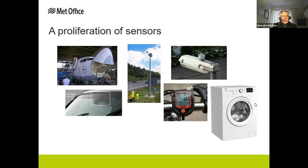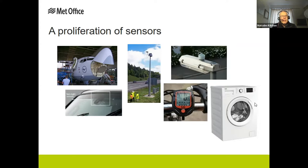There is a real proliferation of sensors in society now. All sorts of infrastructure and devices have sensors in them which have some sensitivity to the weather. Even the humble washing machine has a pressure sensor in it — I've no idea whether it's of any practical use to meteorology, but it shows that sensors are in everything. Some of those sensors are highly capable — the radar in the nose of every civil aircraft is a highly capable radar. Even fairly dumb sensors, like the light sensor in the top of most street lamps, have value because there are a lot of them.